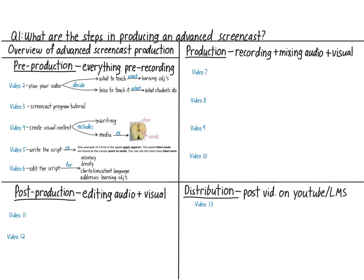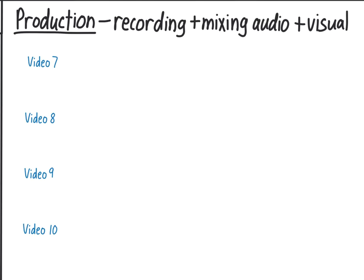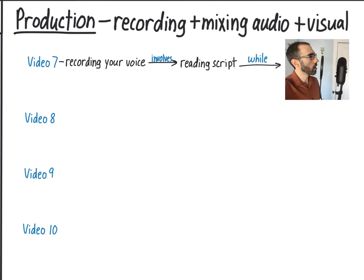Once you have your script and the visual content ready, it's time to move into the production phase. In video 7, I'll show you how to record your voice, which will involve reading your script while speaking into a microphone. I'll give you some tips on how to sound clear and engaging — if you'll pardon the pun, it's not as easy as it sounds. In video 8, you'll learn how to overlay your voice recording with your visual content, like when I made the picture of myself speaking into a microphone appear just as I said those words.